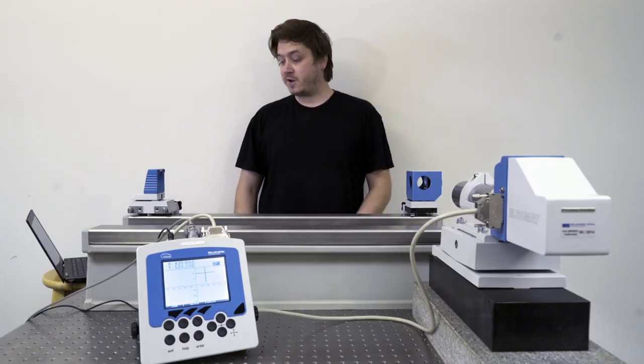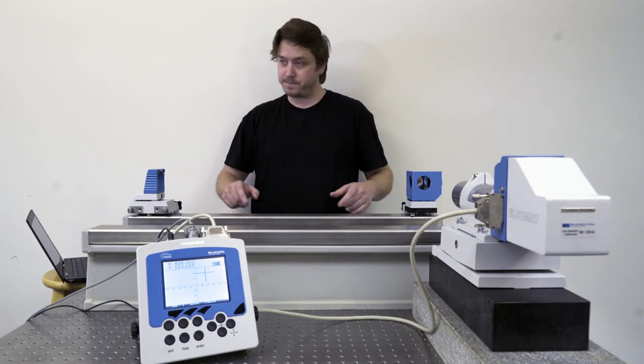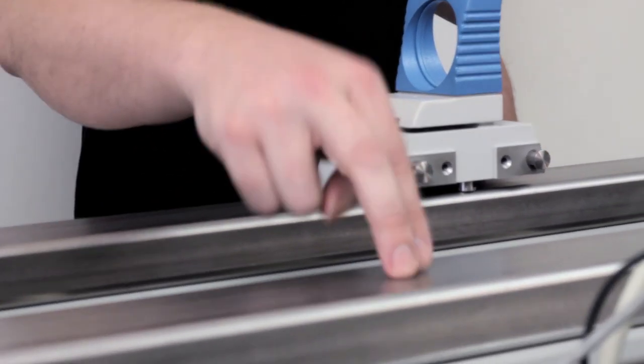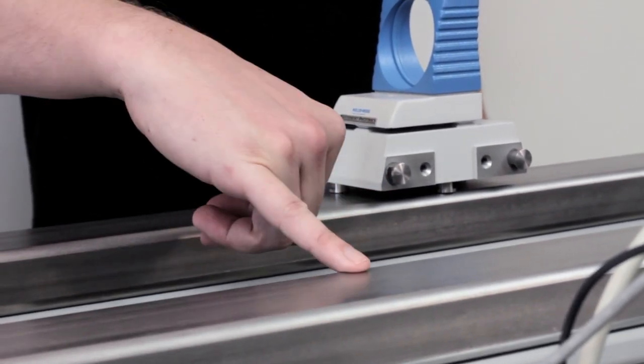Comparing the angle between each of these points will give me a straightness profile of this rail. Now that we have a straightness profile for this rail, we can measure a straightness profile for this rail and also measure the parallelism between the two rails.